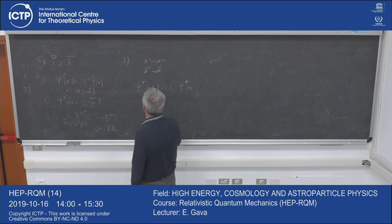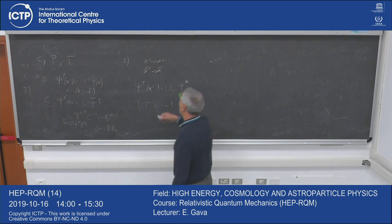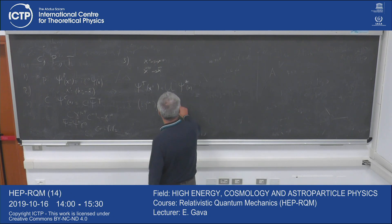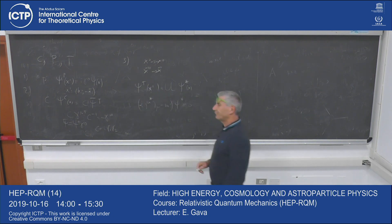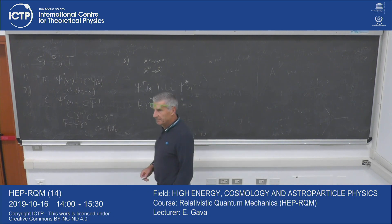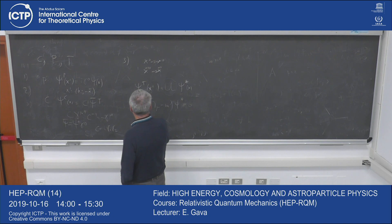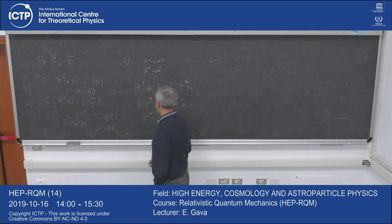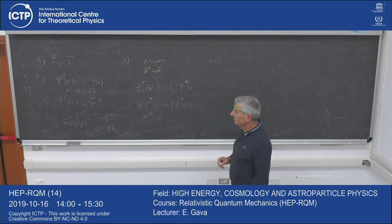To see that, one takes the Dirac equation: (i gamma^mu d_mu - m) Psi = 0, and takes the complex conjugate. There is a minus sign and a star. Now, what is gamma^mu star? That depends on the basis. In the Dirac basis, gamma^0 is real, so gamma^0 star equals gamma^0 — it's real. This is also true in the Weyl basis; the only difference is gamma^0 Dirac is diag(1,-1) and gamma^0 Weyl is the off-diagonal matrix (0,1;1,0), both real.